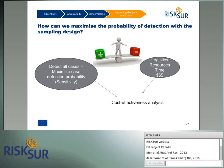What we are really interested in for early detection is maximising the probability of detection with the sampling design — detecting all cases to maximise case detection probability, that is sensitivity, while doing so at the most reduced cost in terms of logistics, resources, or time. We have a tool — cost-effectiveness analysis — to choose the best option among alternatives with the same aim of maximising detection probability. This approach is explained in the online trainings developed for RISC-SER on evaluation and economics.